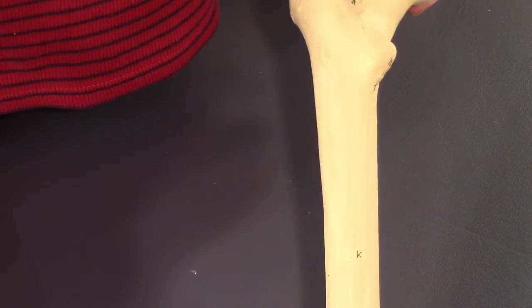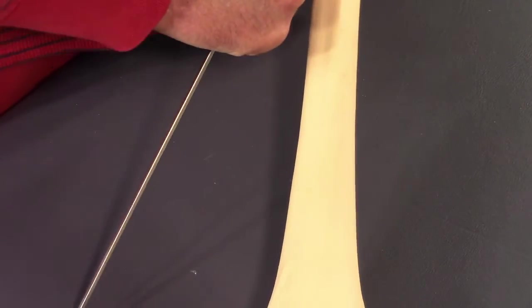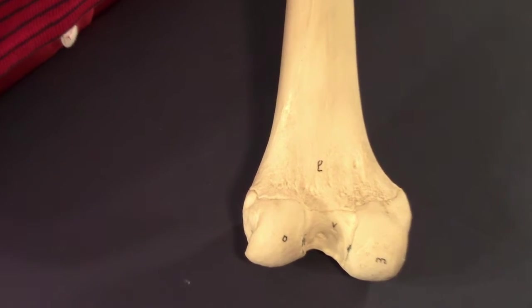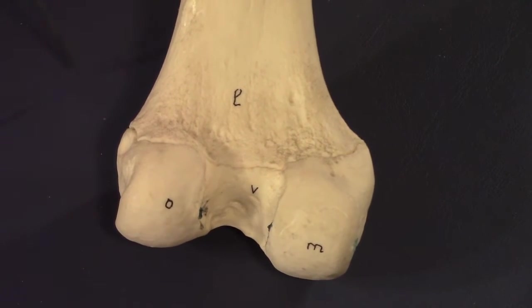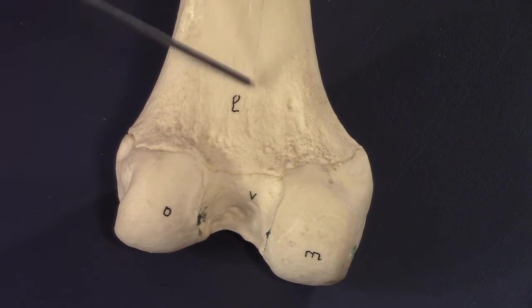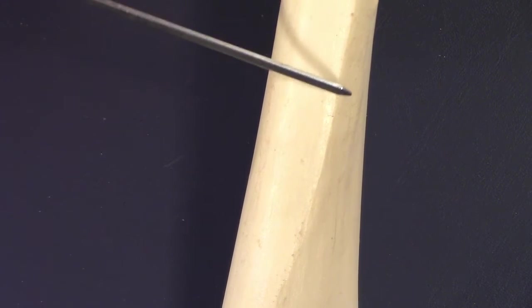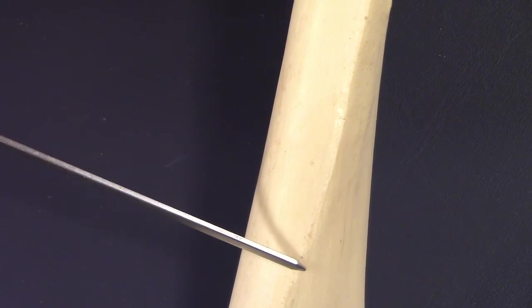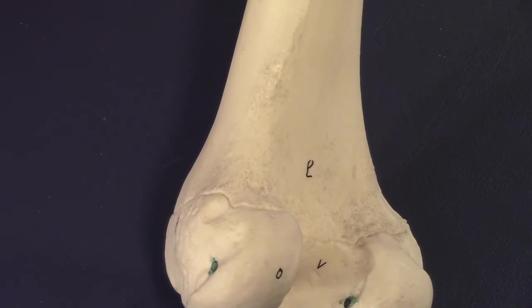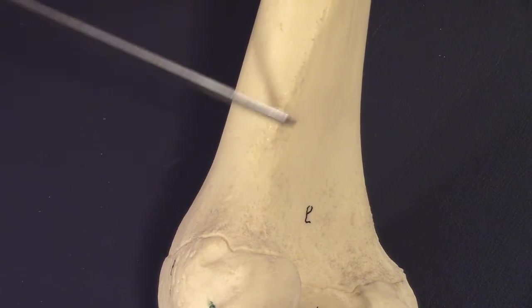Let's stay on the posterior side. We have a popliteal surface right here. And like this is the lateral lip of the linea aspera, but right about at the popliteal surface it morphs into a new name. What's that called?